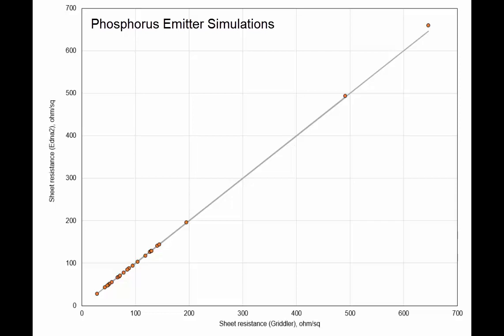This is a comparison of the sheet resistances. I will always plot on the x-axis the results generated by Gridler, or the Gridler caller to PC1D, and on the y-axis, the results of Aetna 2.